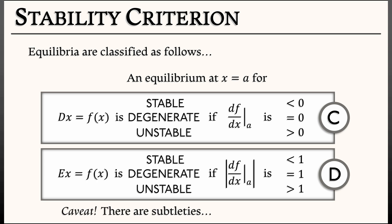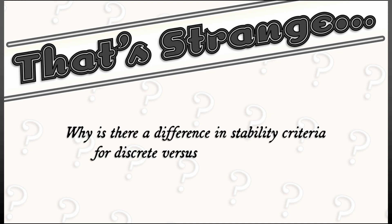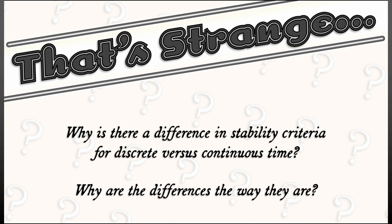Now, what I want you to focus on is the differences between these two. How in continuous time, it depends on whether it's positive or negative. In discrete time, whether it's bigger than 1 or less than 1 in absolute value. Now, that's kind of strange. I mean, why is there a difference in the stability criteria for discrete versus continuous time? Why are these differences the way they are?